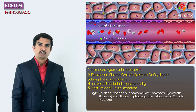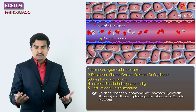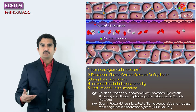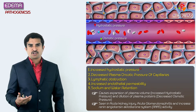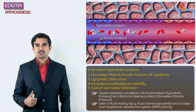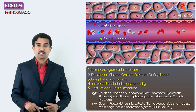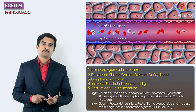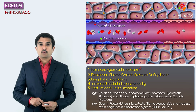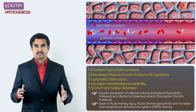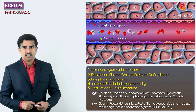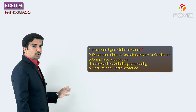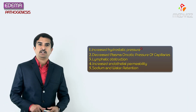This phenomenon is mainly seen in acute kidney injury, where the kidney cannot perform its normal excretory function, leading to increased sodium and water retention and development of edema. Not only acute kidney injury, but also conditions like acute glomerular pathology such as acute glomerulonephritis, as well as increased renin-angiotensin-aldosterone system activity, all cause increased sodium and water retention leading to edema. These are the important pathogenic mechanisms responsible for the development of edema.